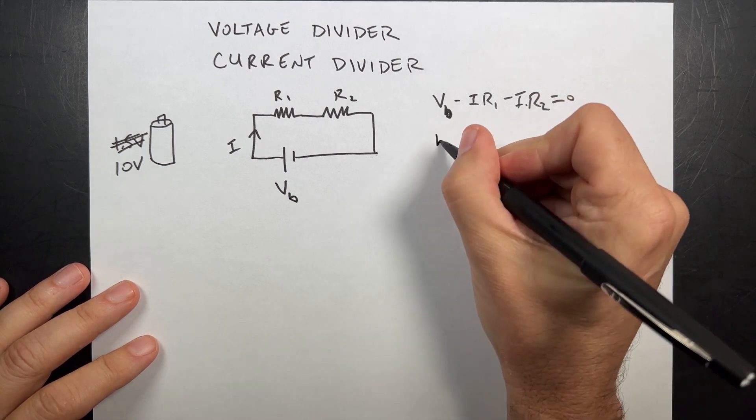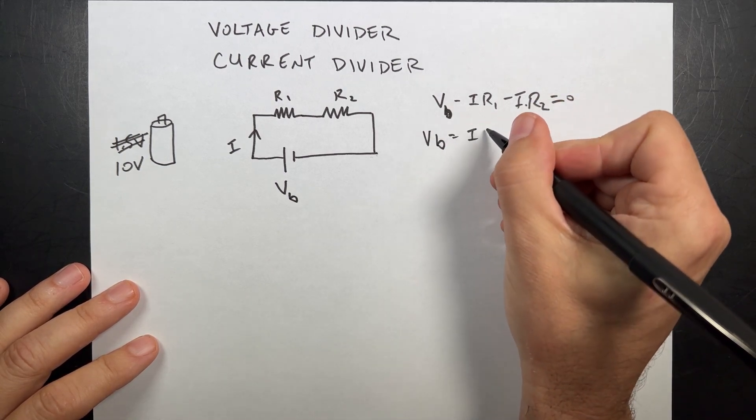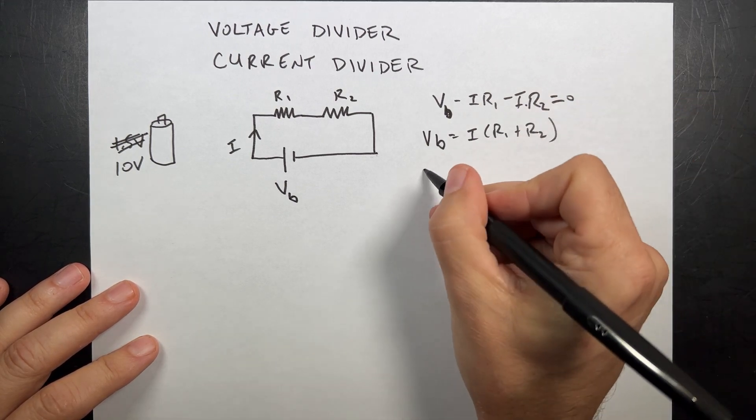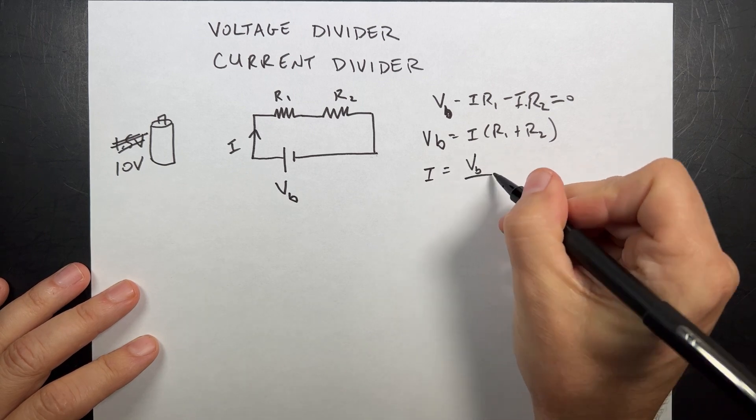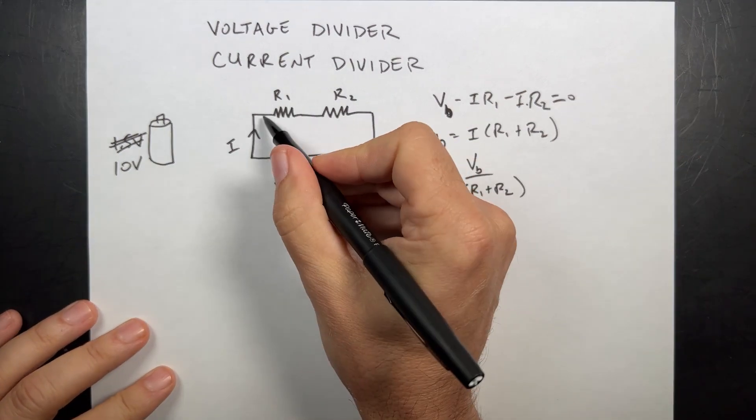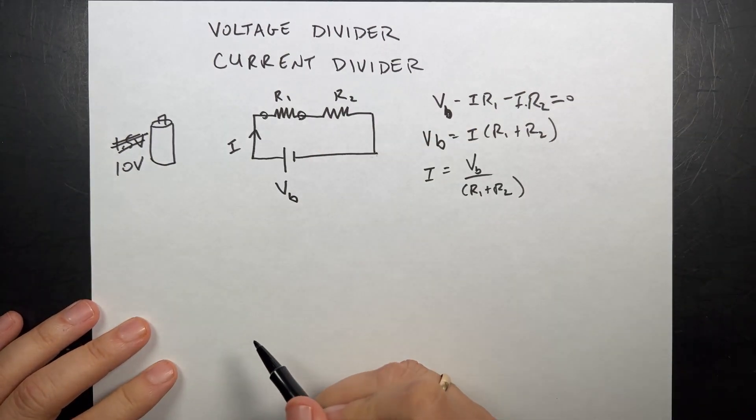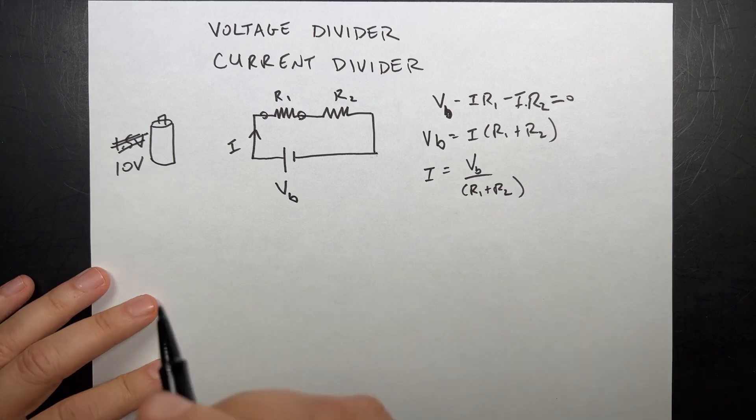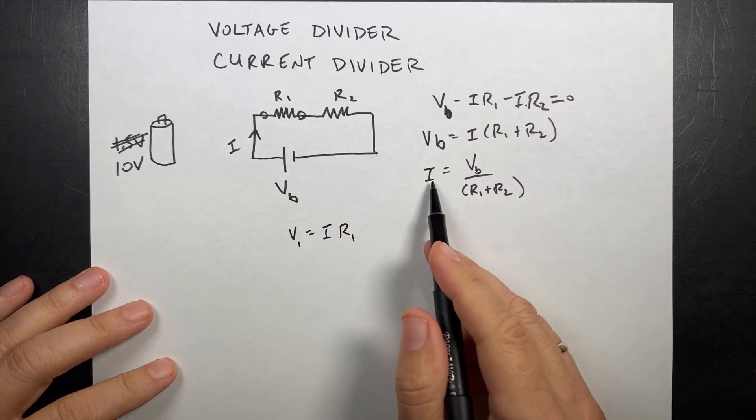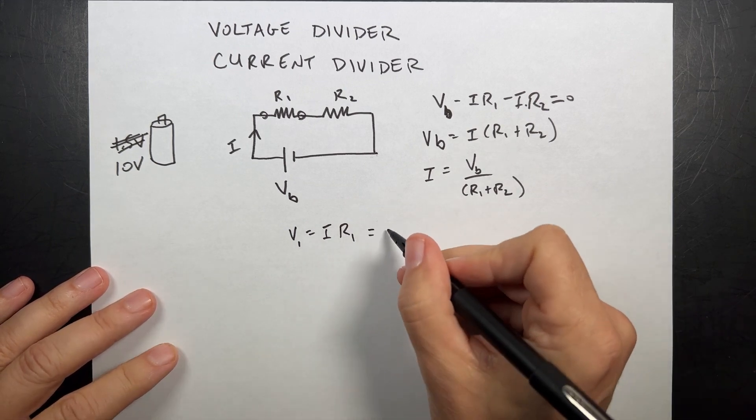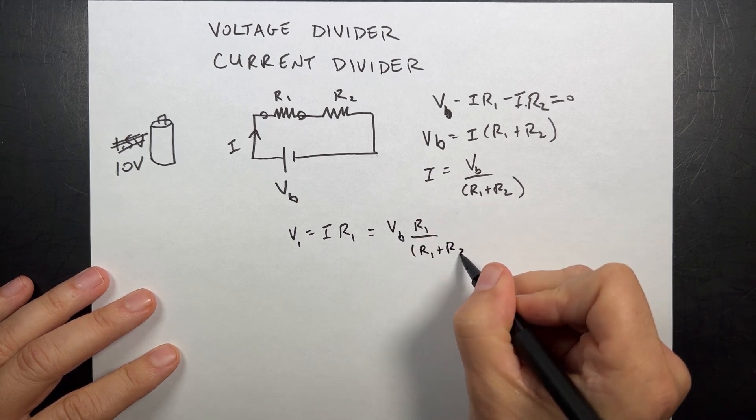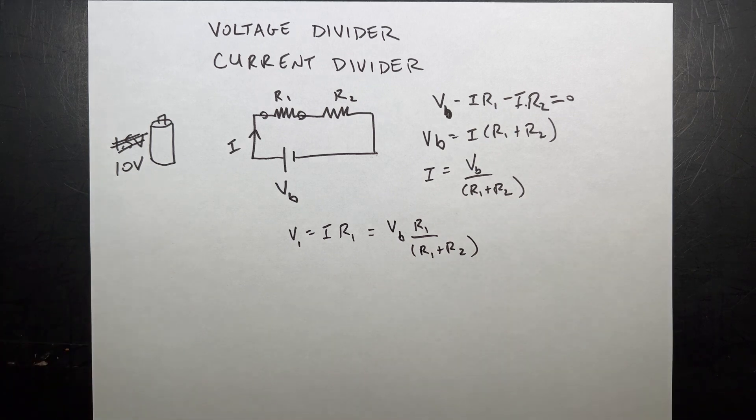So I can write this VB equals I times R1 plus R2, or more importantly I can solve for I. So I is going to be VB over R1 plus R2. Now suppose I measure across just R1. Well V1 is going to be I R1, but that's I right there, so I am going to plug in this value for I. So I get VB times R1 over R1 plus R2, and I did it.